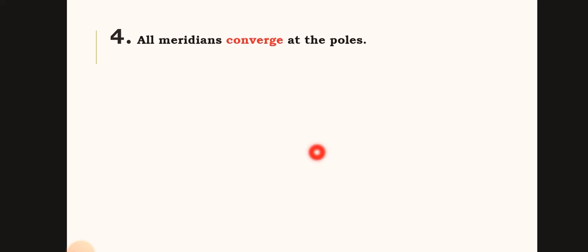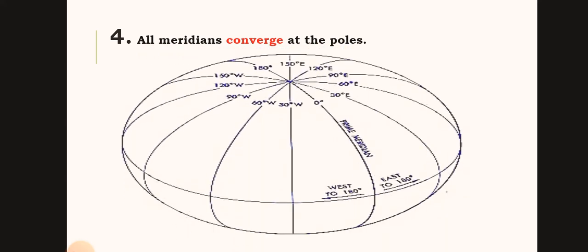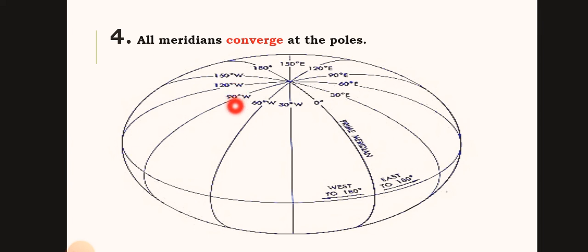Another characteristic of the globe is that all meridians converge toward the poles.